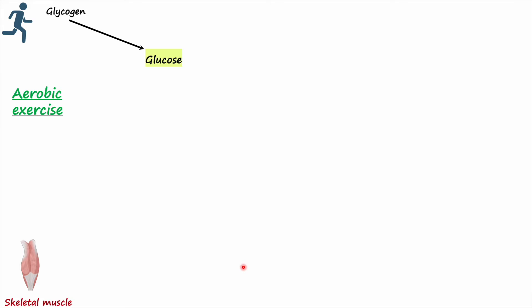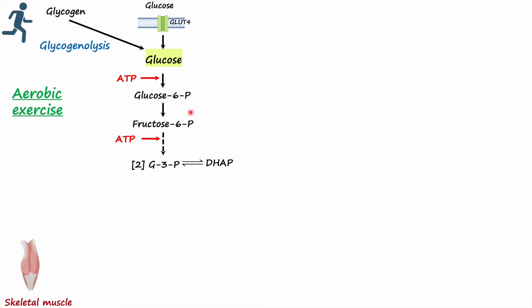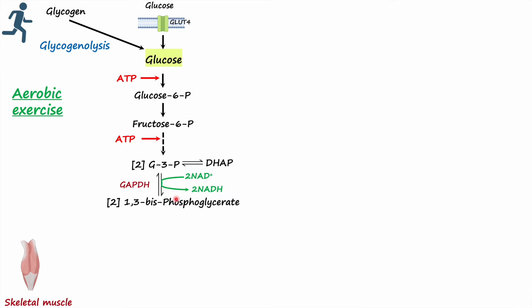During aerobic exercise, glucose can be obtained from glycogen, as skeletal muscle stores glucose in the form of glycogen. Glucose can be released through glycogenolysis or obtained via the GLUT4 transporter from circulation. Once obtained, glucose is broken down through glycolysis to form glyceraldehyde 3-phosphate — this is the first half of glycolysis, which consumes two ATP molecules. Glyceraldehyde 3-phosphate is then converted into 1,3-bisphosphoglycerate by glyceraldehyde 3-phosphate dehydrogenase, and NAD+ is reduced to NADH.